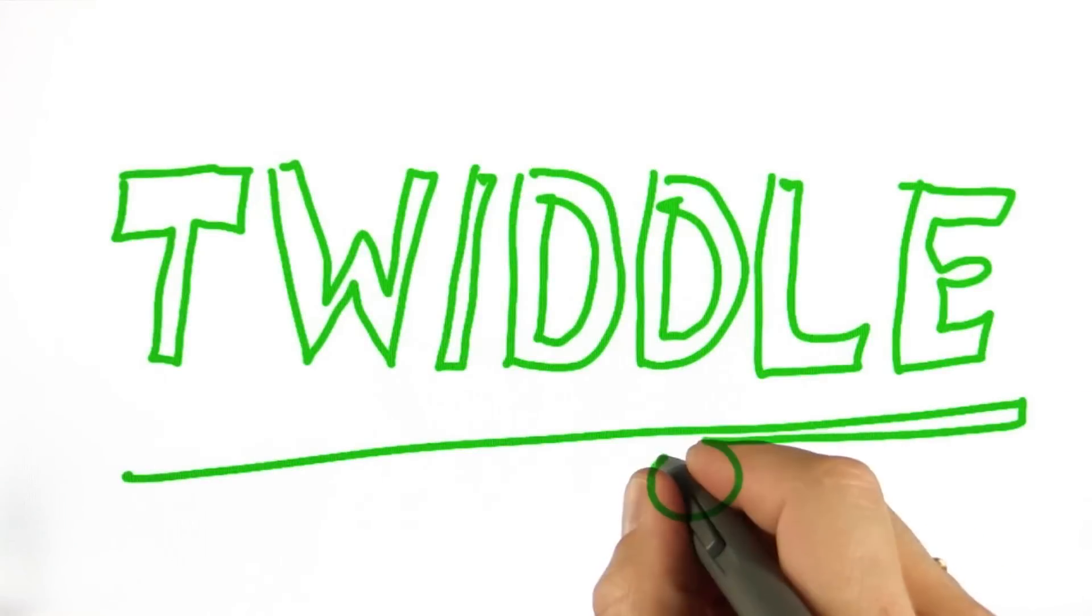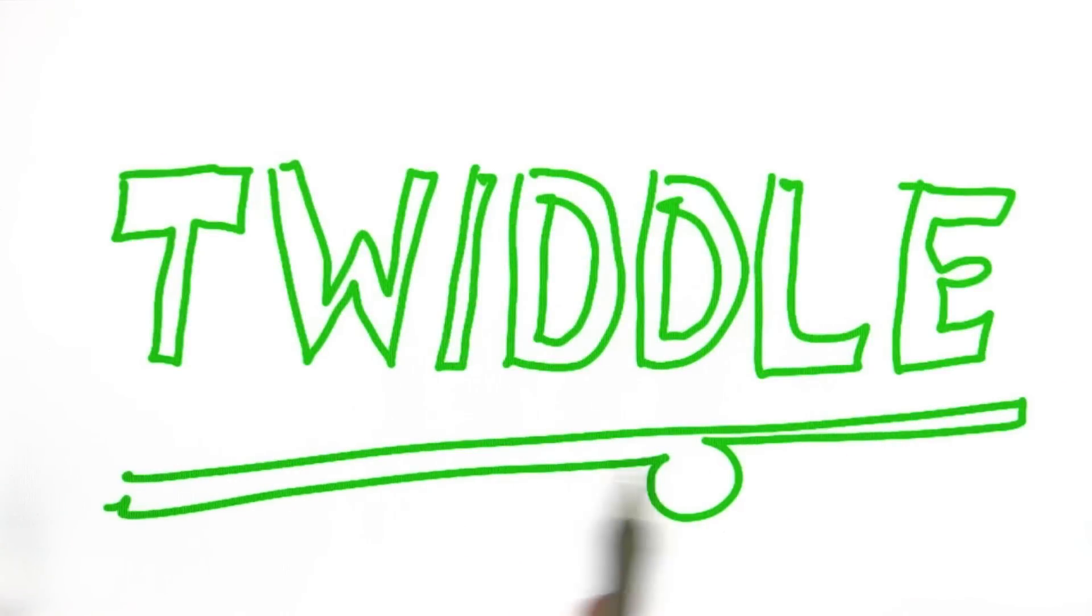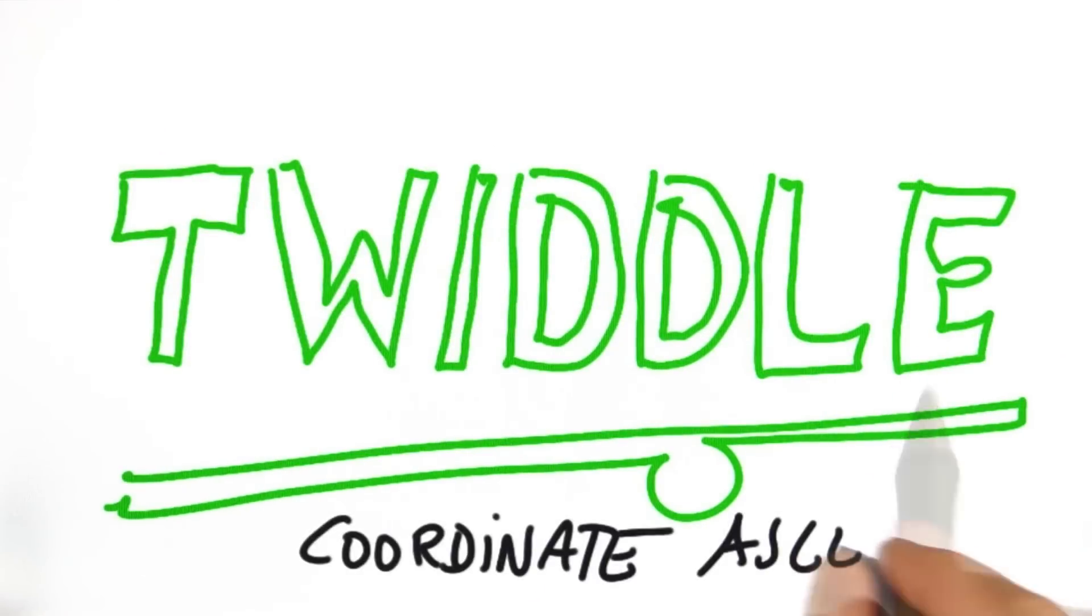The answer is called twiddle. Twiddle is my favorite algorithm that I used in my entire life. Some people call it coordinate ascent to make it sound a little more sophisticated, but I'll just call it twiddle because it really gets to the heart of what's happening.